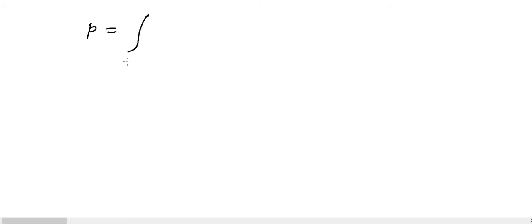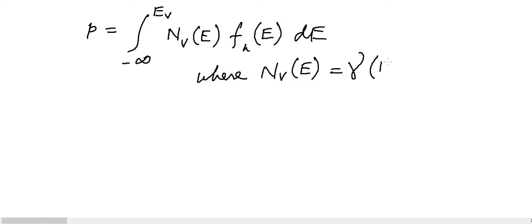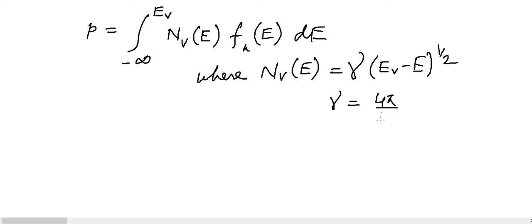Similarly, we can write the concentration of holes P: the limit will be minus infinity to E_V, and the expression uses N_V(E) times F_h(E) dE, where N_V(E) equals gamma times (E_V minus E)^(1/2), and gamma equals (4 pi / h^3)(2 m_h*)^(3/2). Here F_h(E) is the Fermi-Dirac function for holes.